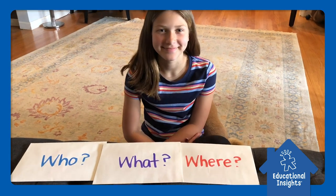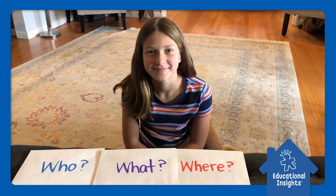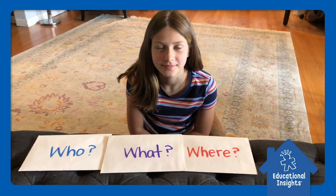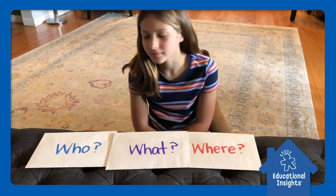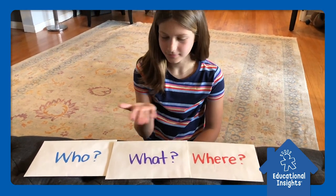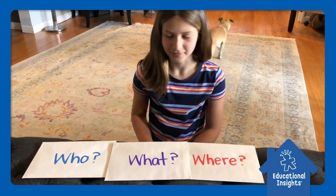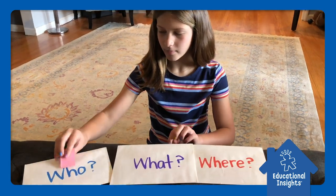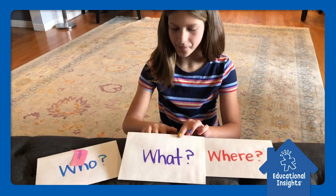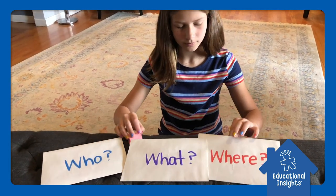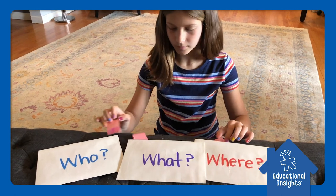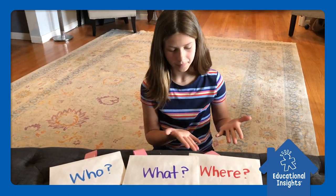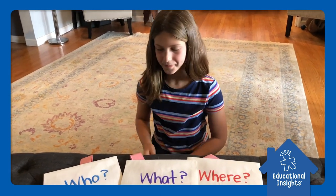Hi everyone, we've got another fun learning at home activity called Creating Silly Stories. What we have here are three different envelopes with 'who,' 'what,' and 'where' on them. Inside each envelope are little slips of paper where we've written characters for the story, the situation that's going to be happening in the story, and the location of where our story is going to happen.